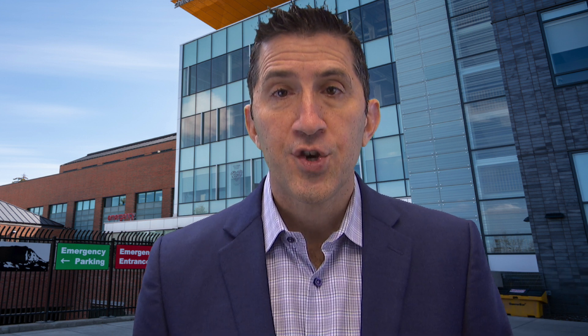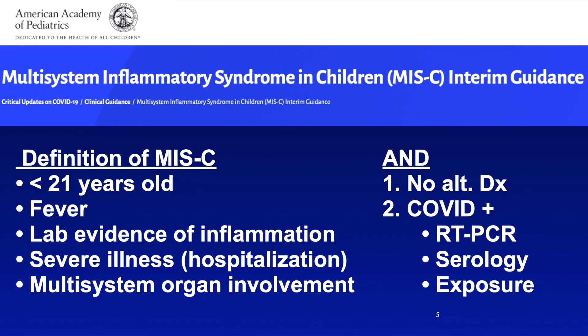So first, the definition of MIS-C. You have to be under 21 years of age. You have to have a fever. There has to be laboratory evidence of inflammation. These children are severely ill and have to have multi-system organ involvement — cardiac, renal, GI, and so forth. They have to have no alternative diagnosis, which is commonly what we found in Kawasaki. And they have to have COVID positive either by PCR, by serology (antibodies), or exposure to somebody with COVID within the last four weeks.